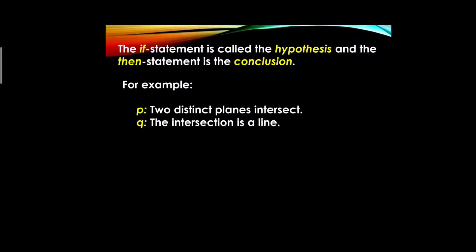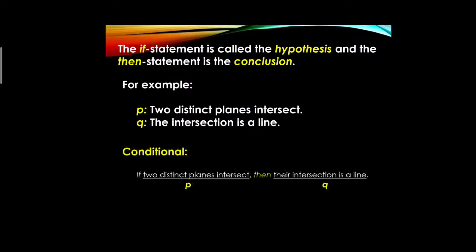To make these propositions a conditional statement, we prefix the word 'if' to proposition p and the word 'then' to proposition q. Thus, the conditional statement becomes: 'If two distinct planes intersect, then their intersection is a line.'